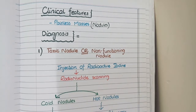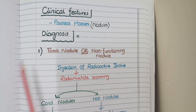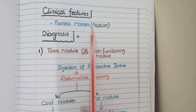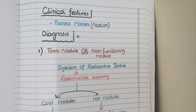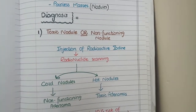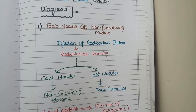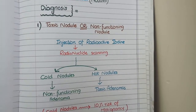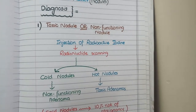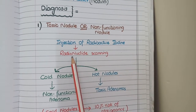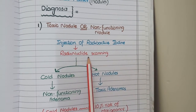Most follicular adenomas present as painless nodules on the thyroid gland. An important diagnostic tool to differentiate between toxic and non-toxic nodules is the radioactive thyroid scan.